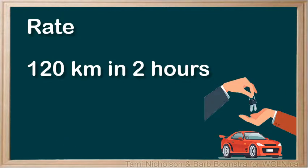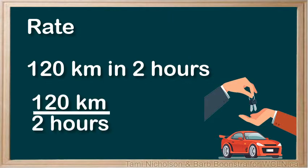For example, you could drive 120 kilometers in 2 hours. The first term of the ratio is measured in kilometers, the second term in hours. You can write this rate as 120 kilometers over 2 hours.